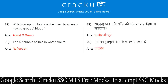Which group of blood can be given to a person having group A blood? The answer is A and O groups. The air bubble shines in water due to reflection.